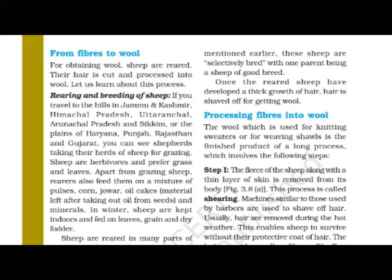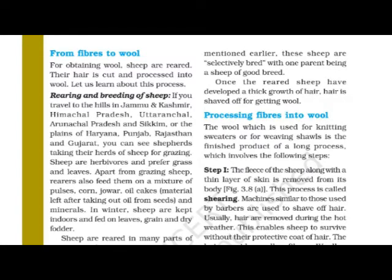This is session number two of lesson number three, Fiber to Fabric. In the previous session we covered animal fibers such as wool and silk, and started the topic of wool, including various examples of animals that give us wool. An activity was assigned to procure an outline map of India and the world and mark places where those animals are found. Today we are going to see 'Fibers to Wool' on page number 26.